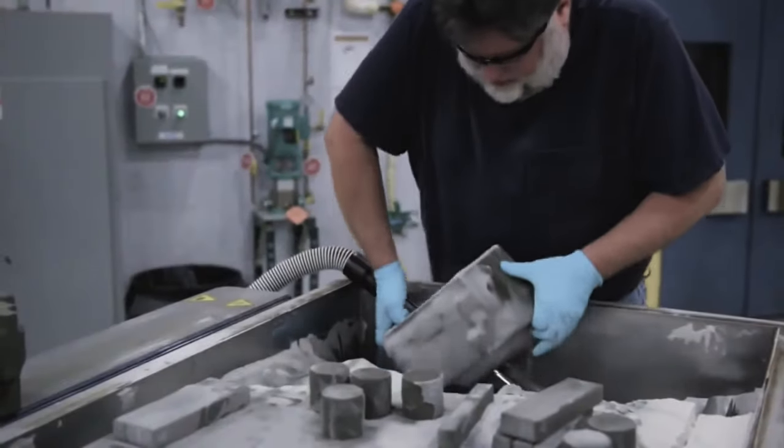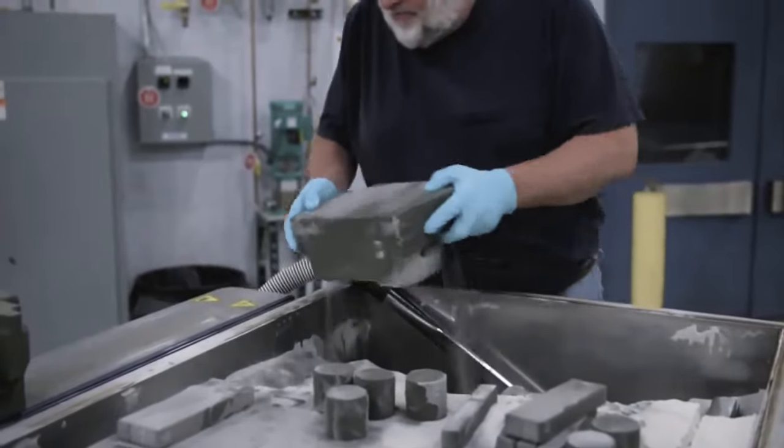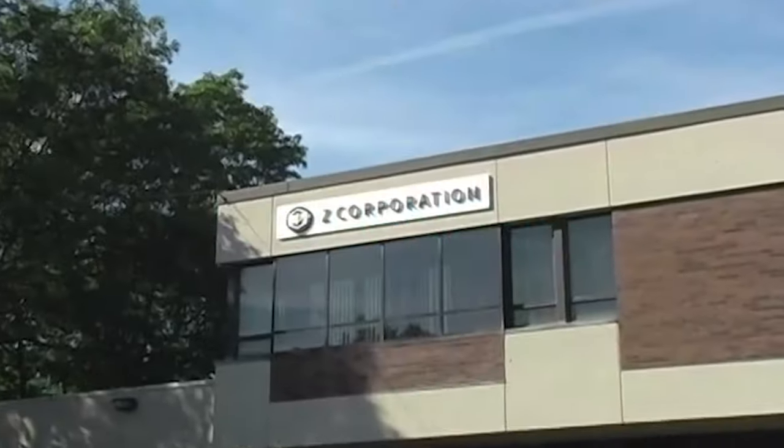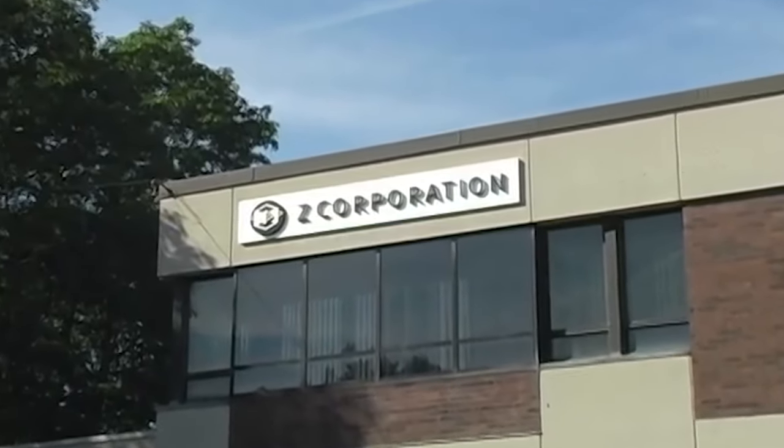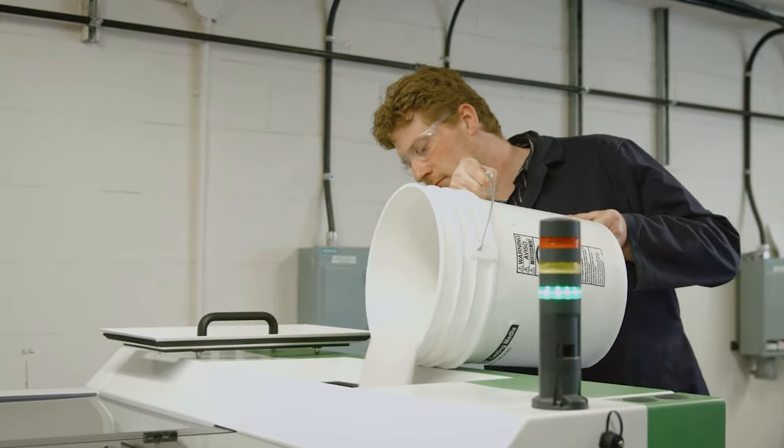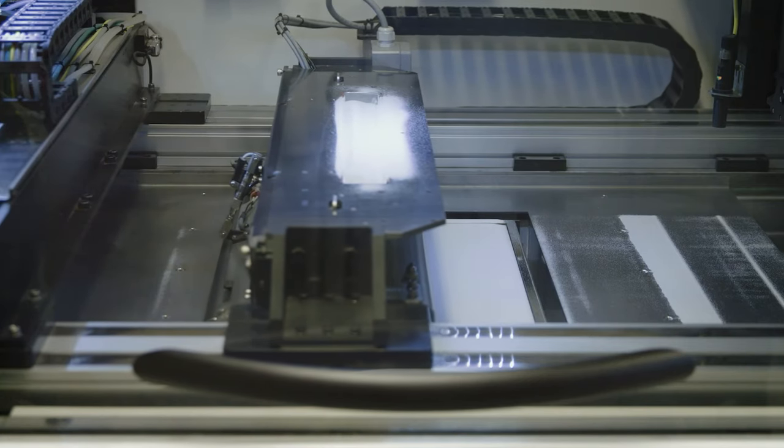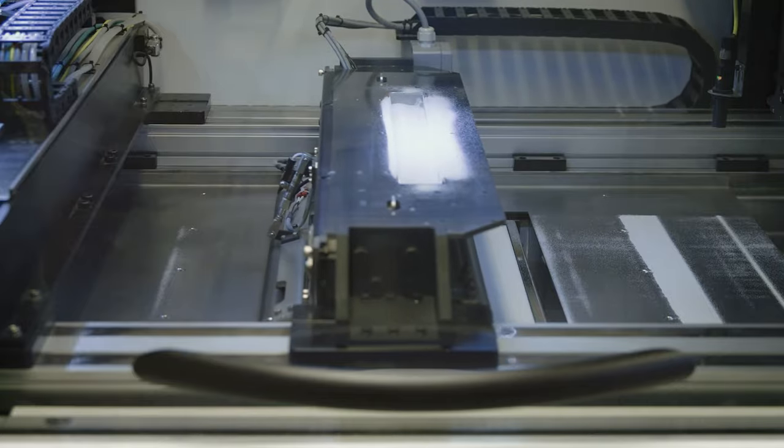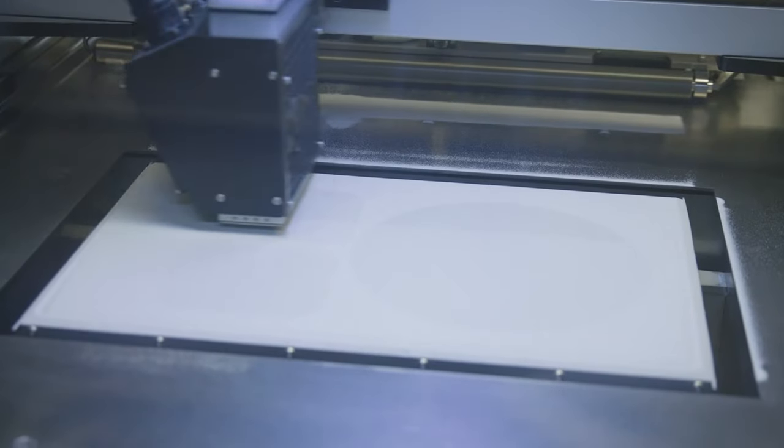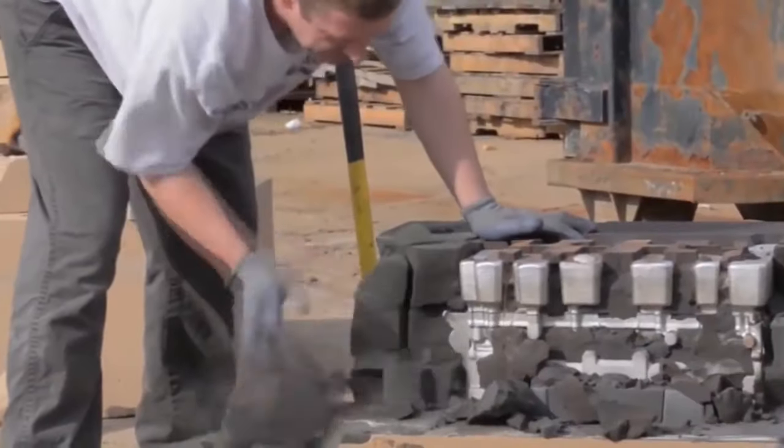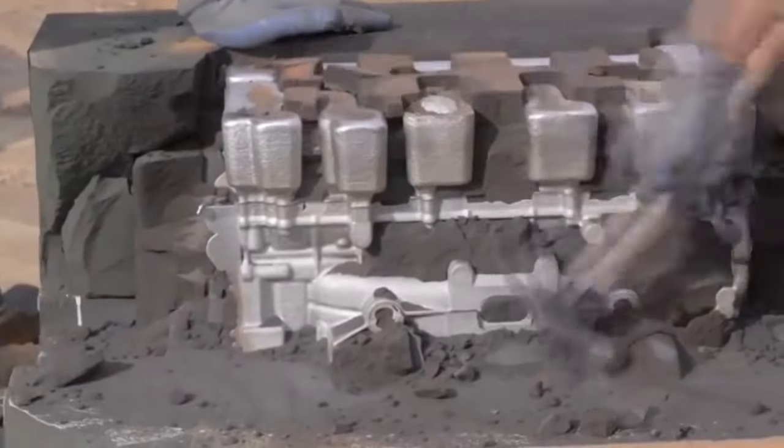The history of sand 3D printing began in the late 1990s with the collaboration of the German company Generis and MIT Corporation. MIT developed and patented powder printing technology with the application of a binder. The collaboration between the two companies led to the creation and launch of the first printers in the mid-2000s.